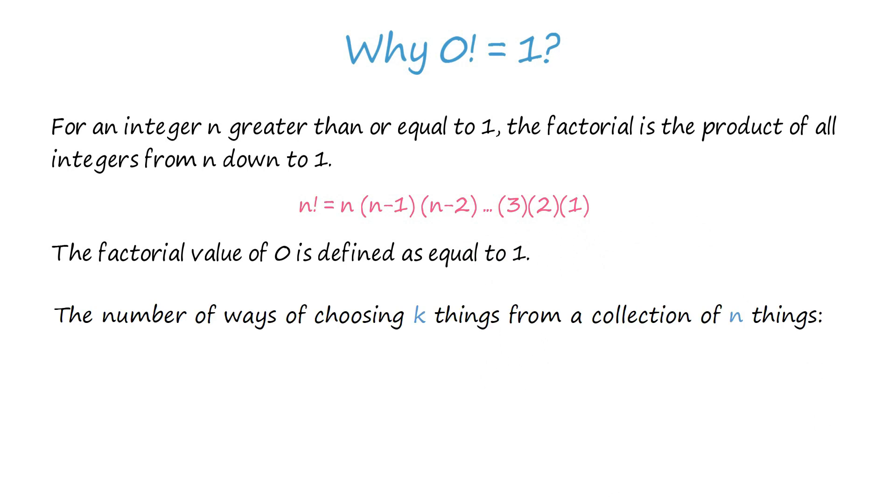When thinking about combinations, we can derive a formula for the number of ways of choosing k things from a collection of n things. The formula is a fraction whose numerator is n factorial, and the denominator is k factorial times n minus k factorial, where k is less than or equal to n.